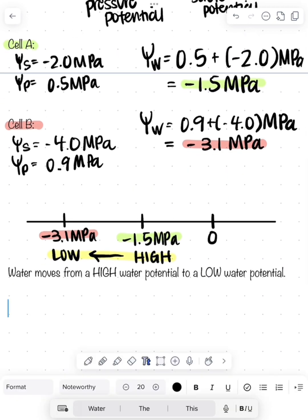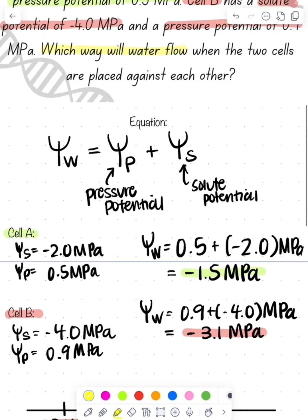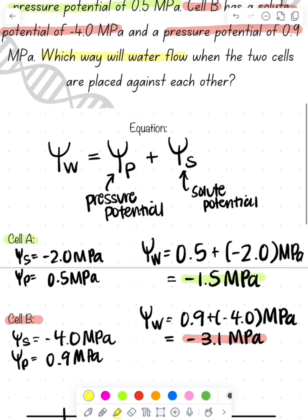The water is going to move from cell A, which was negative 1.5 megapascals, to cell B, which is negative 3.1 megapascals. I hope that this was helpful. Remember, AP Bio path to success. Bye, y'all.